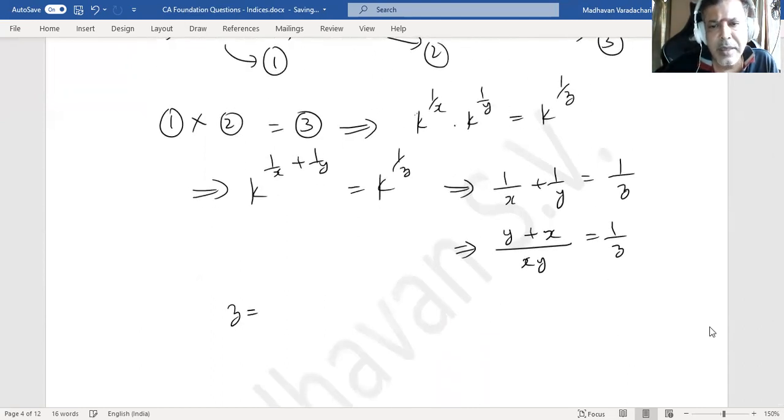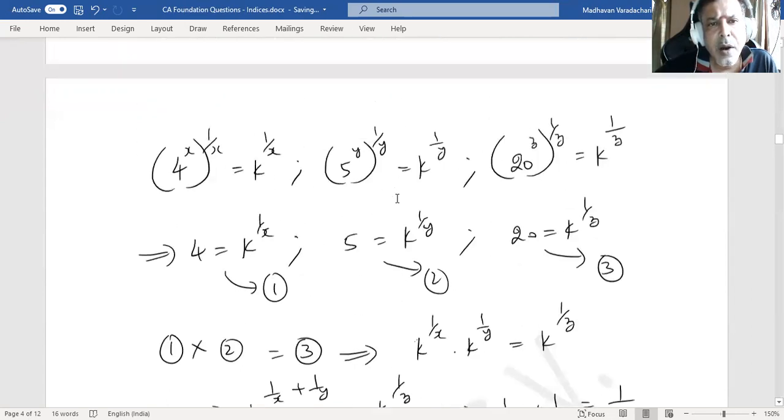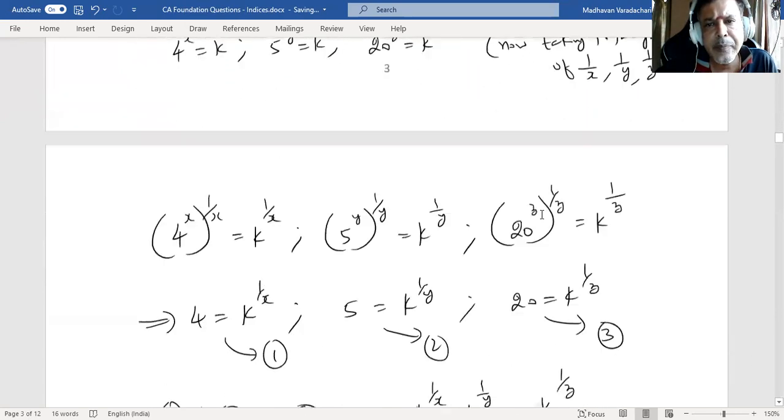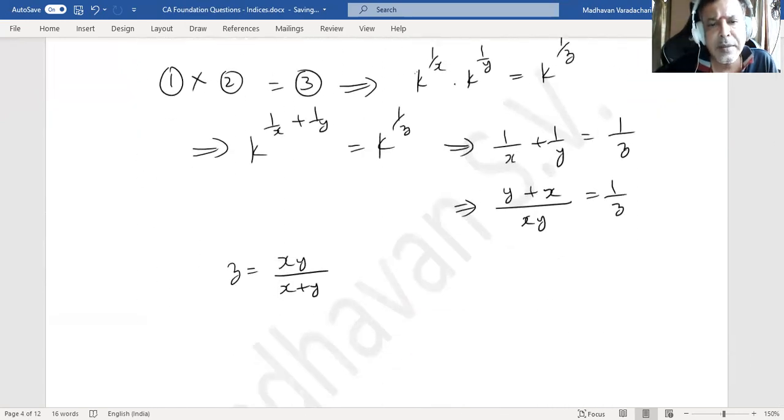We are interested in finding the value of z. z is nothing but the reciprocal of the above, so it becomes xy divided by x plus y. That is our option D. So the answer is D, that's the solution for this problem.